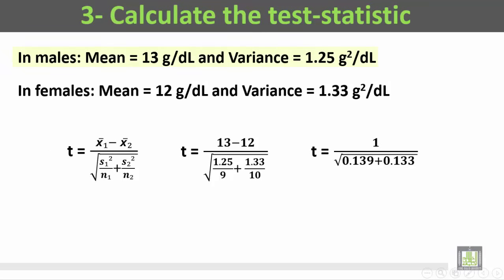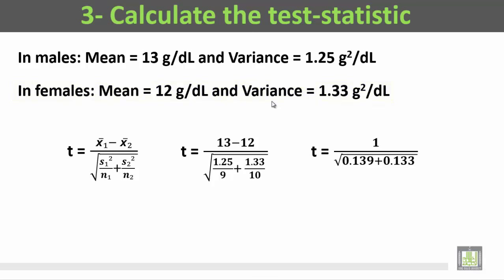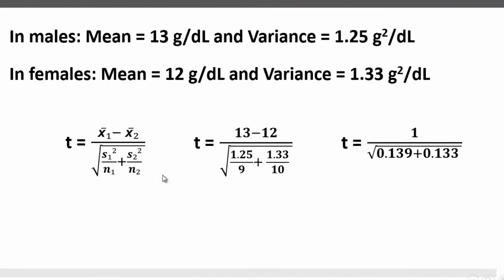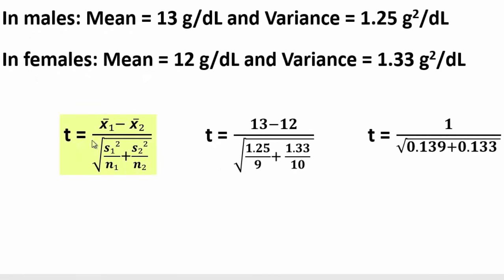In the males group, the mean is equal to 13 grams per deciliter and the variance is equal to 1.25 grams squared per deciliter. In the females group, the mean is equal to 12 grams per deciliter and the variance is equal to 1.33 grams squared per deciliter. So let's apply the equation of the t-test.